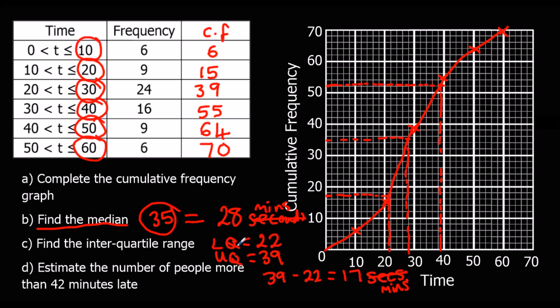So the number of people more than 42 minutes late. So we're looking at 42 minutes, which is here. Go up to the curve, all the way along that line. And it comes out there. So it's coming out at 56. So 56 is, well, after 42 minutes, 56 people have arrived. So we're looking at the gap here. More than. So more than 42, it's this side. So it's how many more than 56 have we got? 56 have arrived. How many more have we got? So 14.